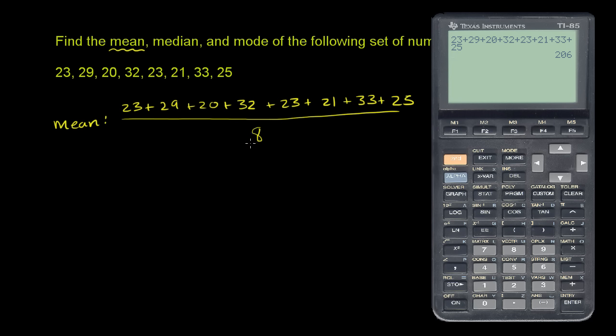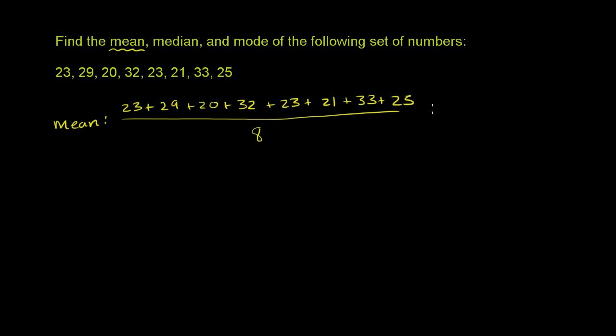And then we want to divide 206 by 8. So 206 divided by 8 gets us 25.75. So the mean is equal to 25.75. So this is one way to measure the center, the central tendency.